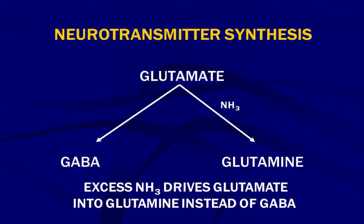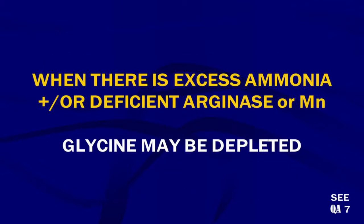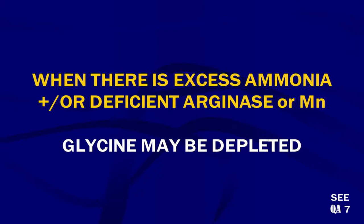Glutamate can either be converted into GABA, or under the influence of ammonia into glutamine. Excess ammonia drives glutamate into glutamine instead of GABA. So if you have too much ammonia, you don't have enough GABA — one reason why people may need more GABA activity and respond to GABAergic drugs, which are usually benzodiazepines like Xanax, Valium, and Clonazepam. Excess ammonia changes neurotransmitter expression in the brain.